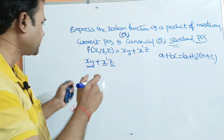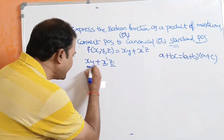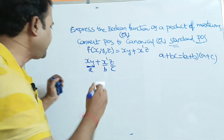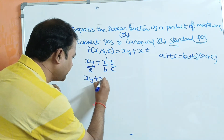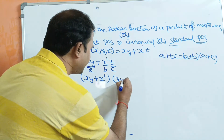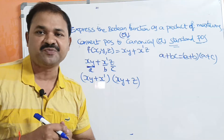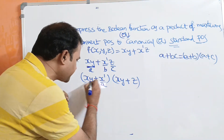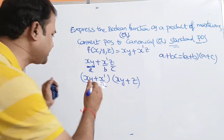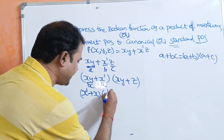Here the expression is xy + x'z. Let xy = a, x' = b, z = c. So we can write this as (a + b)(a + c), which gives (xy + x')(xy + z). Again, this is in the form of a + bc with distributive law. Let x' = a, xy = bc. So x' + bc becomes (x' + x)(x' + y), giving (x' + x)(x' + y)(xy + z).